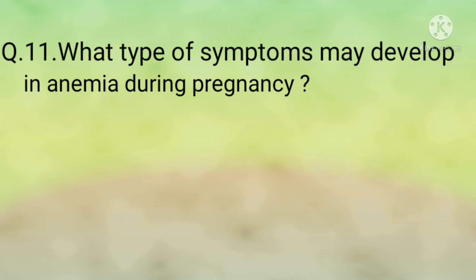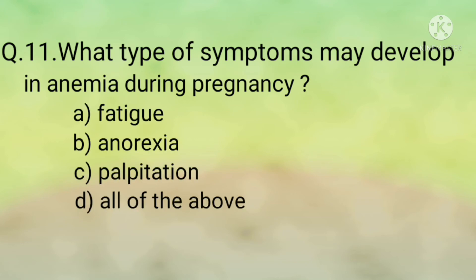Question number eleven: What type of symptoms may follow in anemia during pregnancy? Options are: option A, fatigue; option B, anorexia; option C, palpitation; option D, all of the above. The correct option is option D, all of the above.